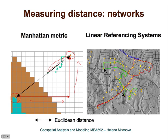Here is an example of a linear referencing system. You can probably recognize that this is a bus route network. For example, we want to compute the distance between two points. The Euclidean distance would be the dotted line. However, within a linear referencing system, we compute the distance along the route by adding the distances along the segments between the bus stops. So it will be much longer, but if you are computing the distance you will actually travel between these two points, it will be this green line.